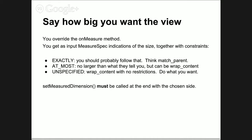onMeasure is called to decide how big the view is. The views on the screen form a hierarchy - they form a sort of tree. Android, at some point, needs to go up and down this tree to decide where everybody is positioned and how big everybody is. When onMeasure is called to ask you to please decide how big your view should be, you are passed a measure specification that are integers encoding both a size and a wish.